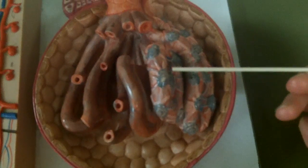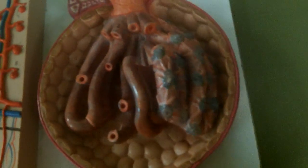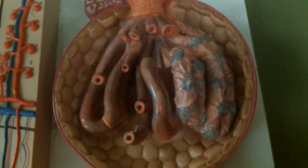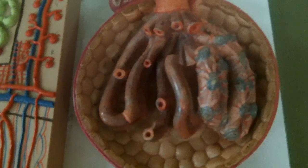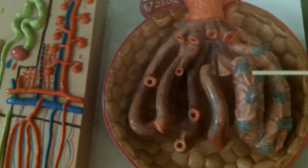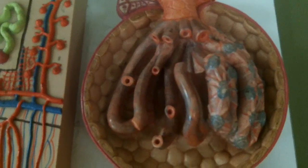So these little cells right here are representing the podocytes that wrap themselves around and they have little feet-like extensions called pedicels, and the slits in between them are the filtration slits.